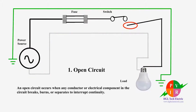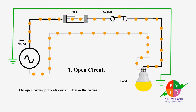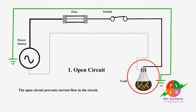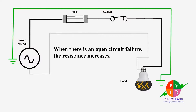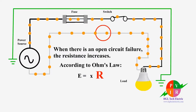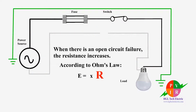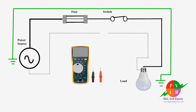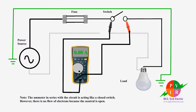An open circuit prevents current flow in the circuit. When there is an open circuit fault, the resistance increases. According to Ohm's law, the current must decrease. If we measure the total current of the circuit with an amp meter, we would observe that there is no current.